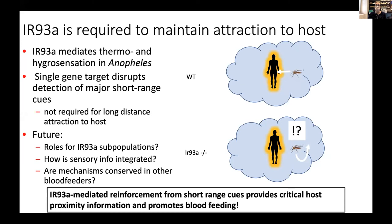Do you think IR93A may serve in chemoreception? That's an interesting question. In Drosophila it seems to be expressed in other locations including outside the antenna. We don't see expression outside the antenna in Anopheles. But we do see some expression in a subpopulation of Orco-positive neurons. What the significance is, we don't know — from our gross experiments they seem to respond to odors from human scents, but there might be some subtle influence on odor-seeking as well.